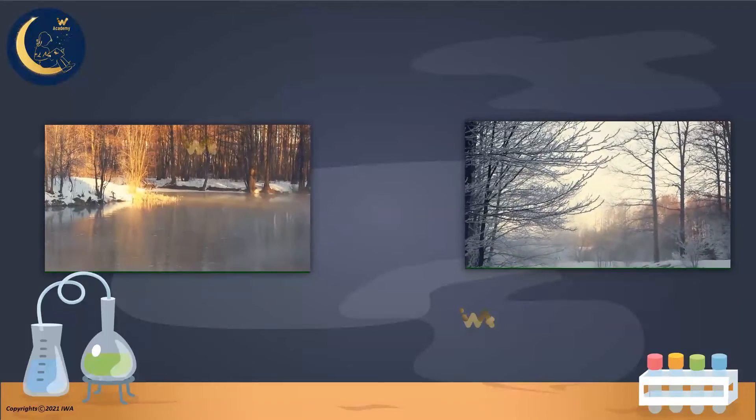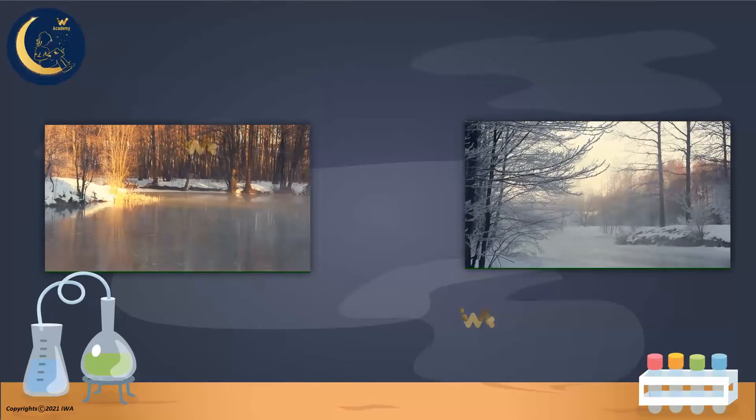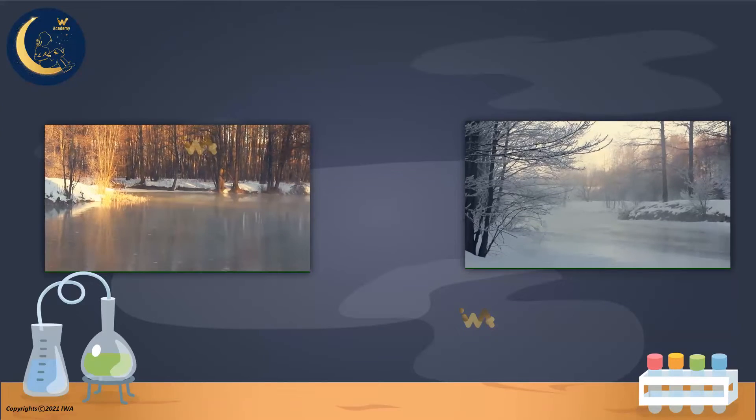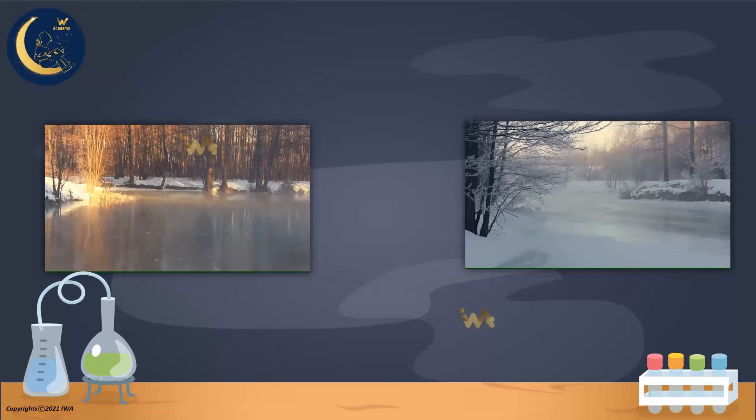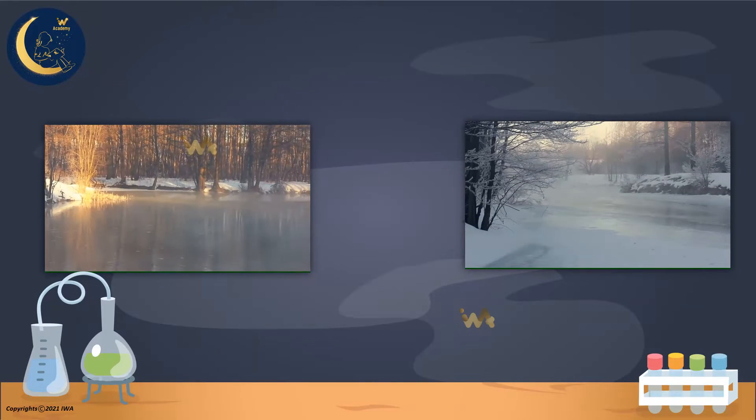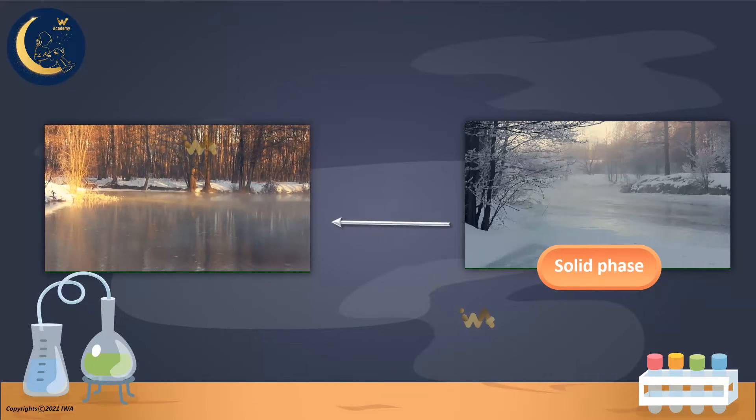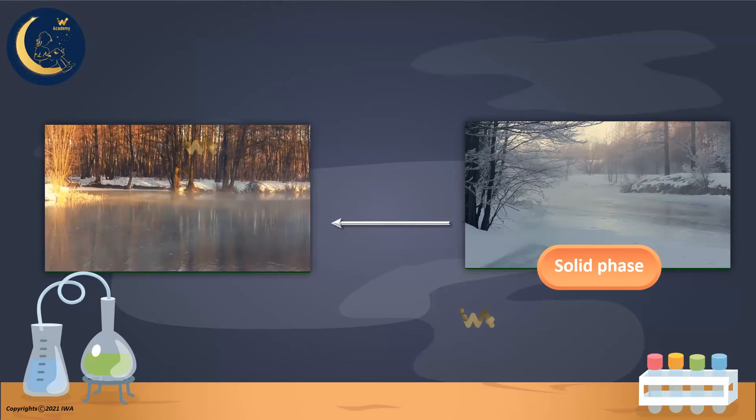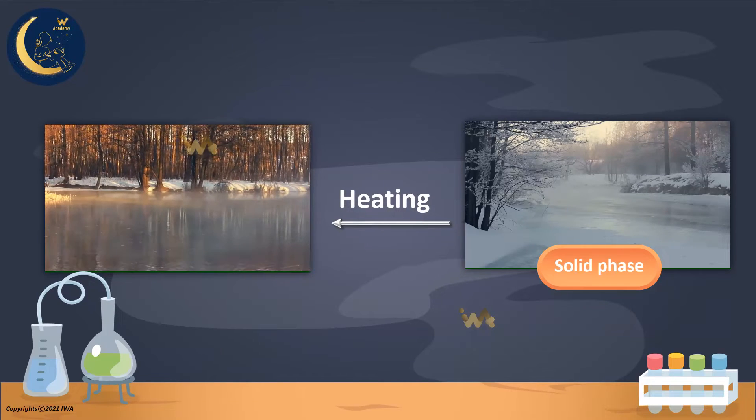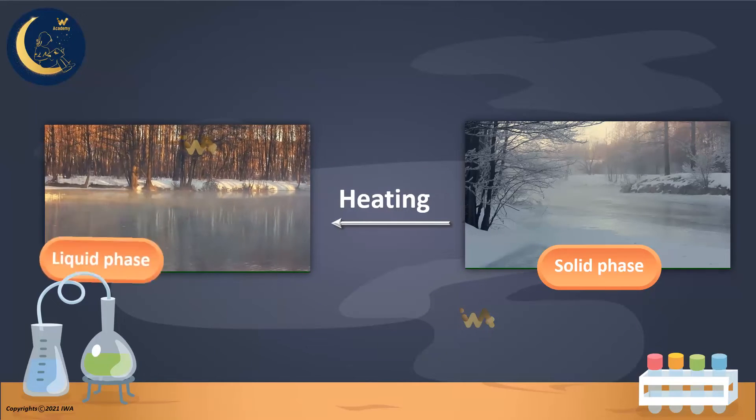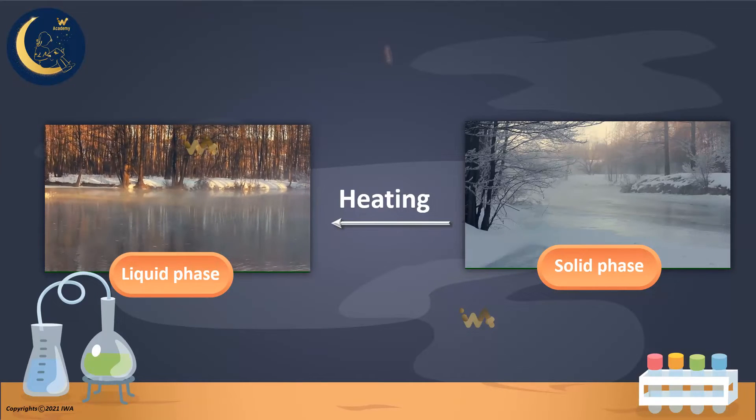We see the processes of melting and freezing often in our lives. For example, when it begins to snow in very cold temperatures, the snow is in the solid phase. Then, when the sun comes up the next day, the snow is heated up. We find that the snow has transformed into water in the liquid phase, and this is the process of melting.